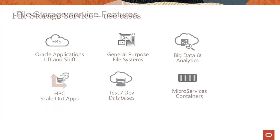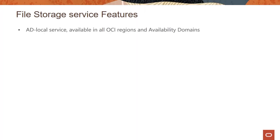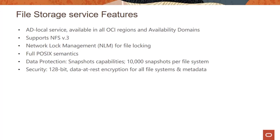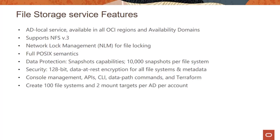What are some features of the file storage service? The service is AD-local — if you have a multi-AD region it's an AD-local service. It supports NFS v3 protocol, network lock management for file locking, and full POSIX semantics. For data protection we support snapshot capabilities and you can create up to 10,000 snapshots per file system. For security we support encryption for data at rest for all file systems and metadata, and very soon we'll also support encryption in transit. You can access the service through the console, API, CLIs, SDKs, and you can create 100 file systems and two mount targets per AD per account — these are soft limits you can increase.